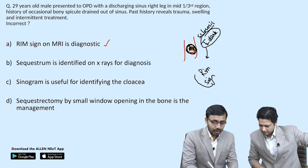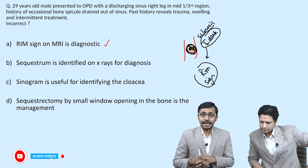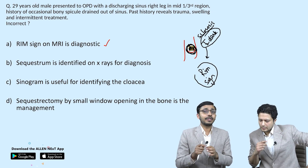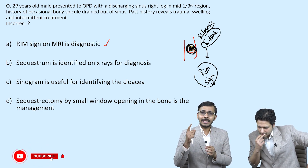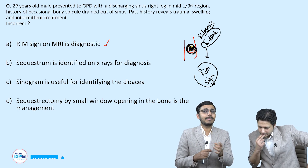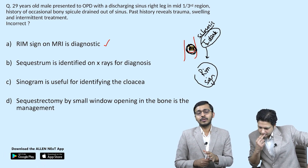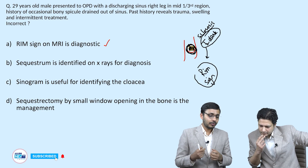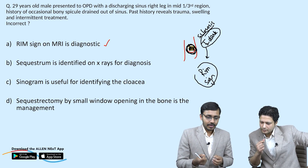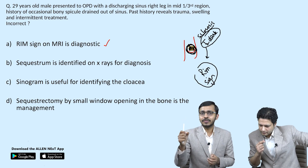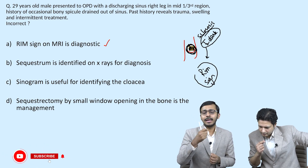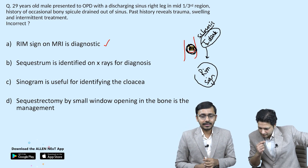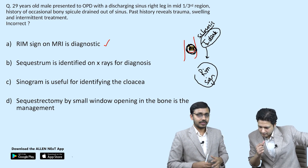Option B — sequestrum is identified on x-ray for diagnosis. Sequestrum is the hallmark of chronic osteomyelitis; it is the dead bone and is picked up on x-ray. Option C — sinogram is useful for identifying the cloaca. Since there is a draining sinus, you can insert a cannula through it, inject contrast, and beautifully see the communication into the dead cavity in the bone.